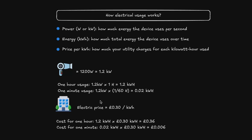Let's assume our energy provider charges 30 pence per kilowatt hour. To calculate the cost for one hour of running this hairdryer, we take 1.2 kWh × £0.30/kWh, which gives us the total price. We can do the same for one minute — take the one-minute usage and multiply by the cost. This gives us the price for running one minute of that appliance. This recap will help us understand how to model usage in our Java Spring Boot application.